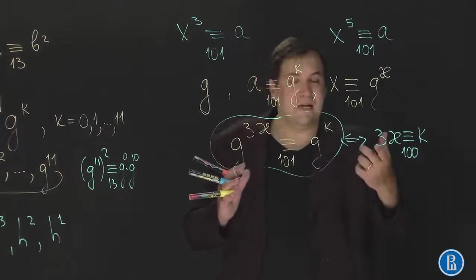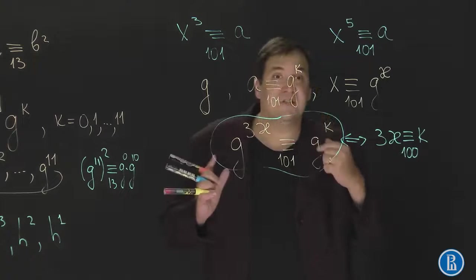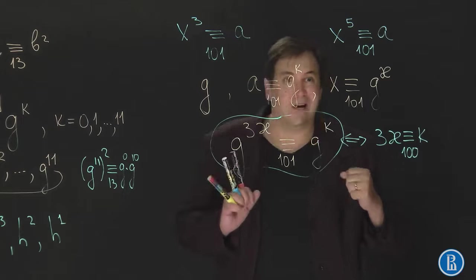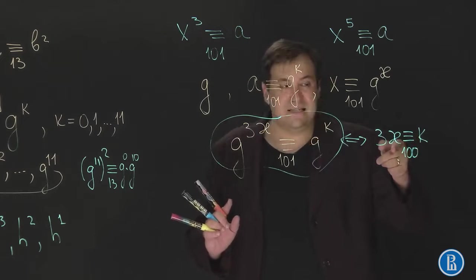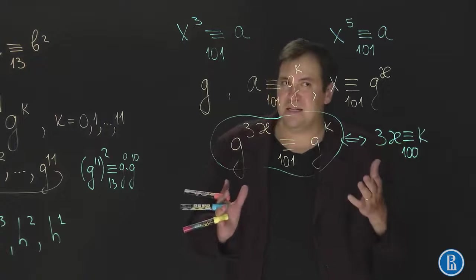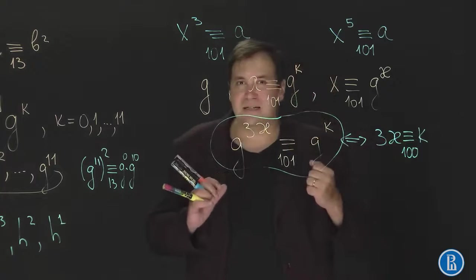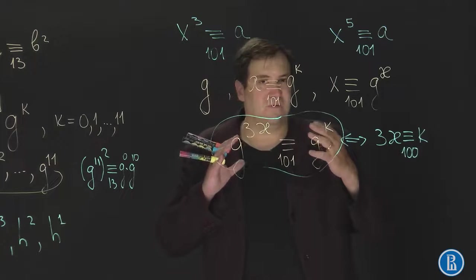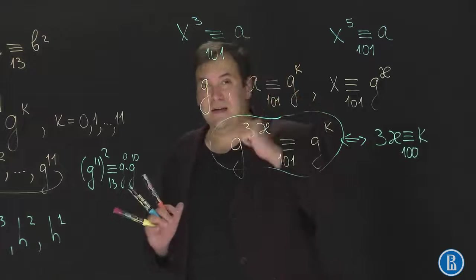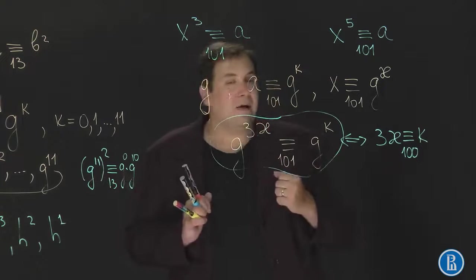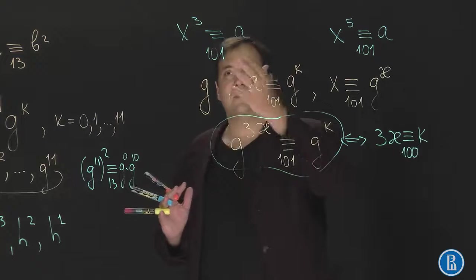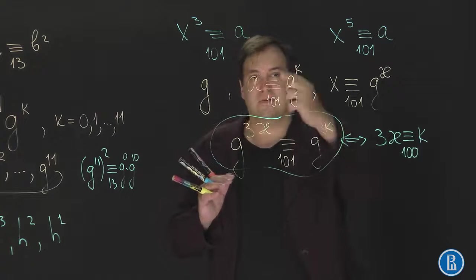But since 3 and 100 are mutually prime, then 3 is a reversible element modulo 100. So for every k there exists kappa. You know what this means? This means that for every a there is a solution. Nice result.